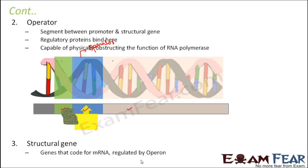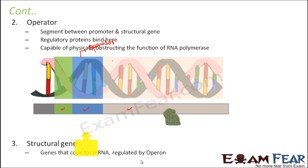When the regulator that was bound to the operator moves back and leaves the operator, the operator region is free. As a result, RNA polymerase continues with the process of transcription and mRNA will be synthesized. In this situation we say that the genes are being turned on.